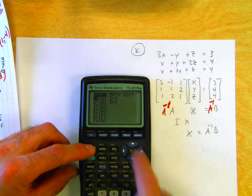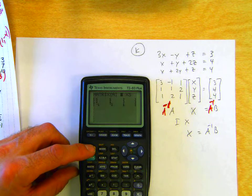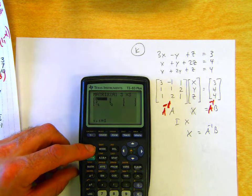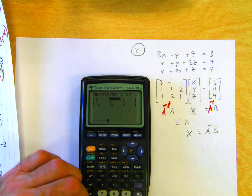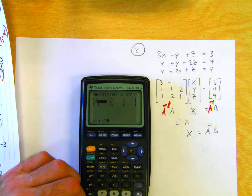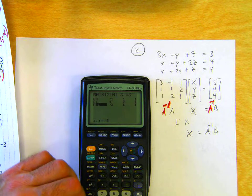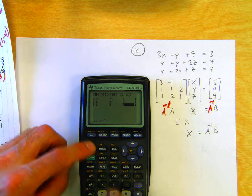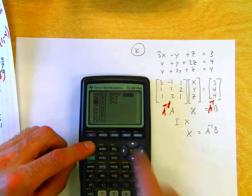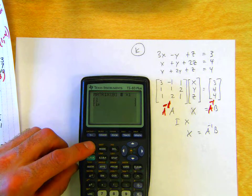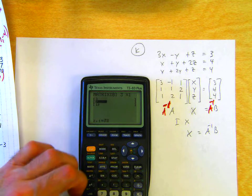So matrix A is a 3 by 3, and the elements are 3, negative 1, 1, 1, 1, 2, 1, 2, 1. And go back into matrix, edit the B matrix, 3 by 1, and it's 3, 4, 4.